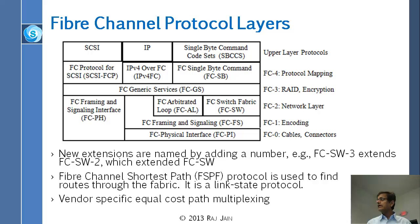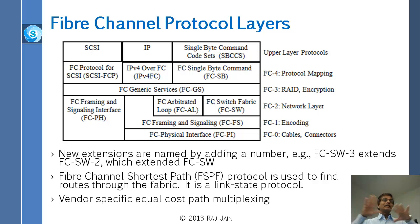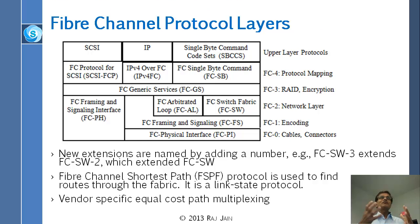They use Fiber Channel Shortest Path First — FSPF. Just like we had ECMP, equal cost multipath, they have equal cost multipath but they call it FSPF. Interestingly, Fiber Channel came up with this routing approach before Ethernet adapted it. So Fiber Channel was the first to use this whole routing thing in their network, and then Ethernet said, why can't we do it too? So it is not just IP which can do routing — Ethernet can do routing too, and so can Fiber Channel.